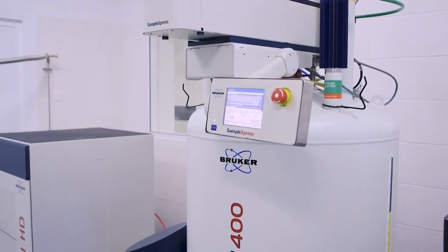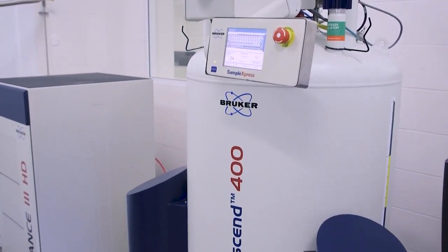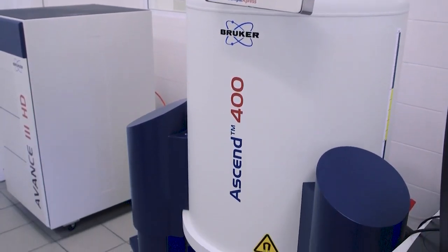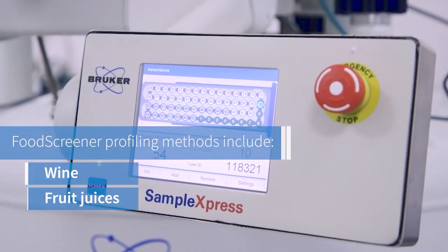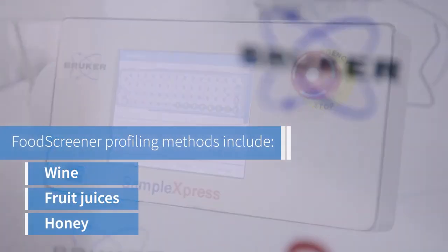Bruker's Food Screener is a fully automated tool based on magnetic resonance, which allows food producers and retailers to ensure the quality and authenticity of their products before they go on the market.